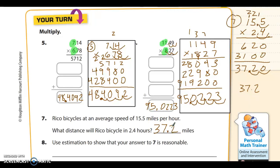And then we've got to check for reasonableness. 15.5 really could round up or down. 5 is right in the middle, so we could round that up to 16, and we could round this down to 2. And 16 times 2 would be 32. That's close enough to 37. And that's really what you can do to check your answer on number 8. Number 8 says use estimation to show that your answer to 7 is reasonable. So 15.5 is close to 16, 2.4 rounds down to 2, 16 times 2 is 32. 32 is close to 37.2.